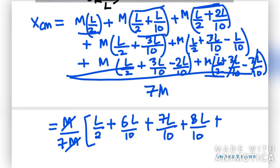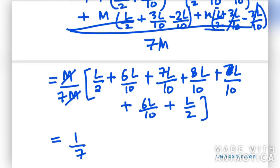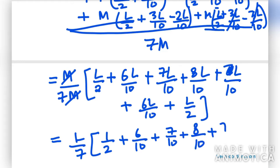For the fifth term, it will be 2L/10, and L/2 + 2L/10 gives 7L/10. Wait — the fifth gives 2L/10, making it 6L/10 after combining. For the sixth one it will be L/10, giving 6L/10. And the last one is L/2 only. So taking L common from all terms, we are left with: 1/2, 6/10, 7/10, 8/10, 7/10, 6/10, and 1/2.